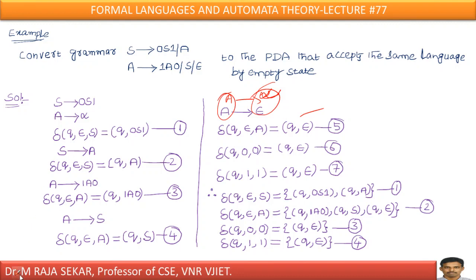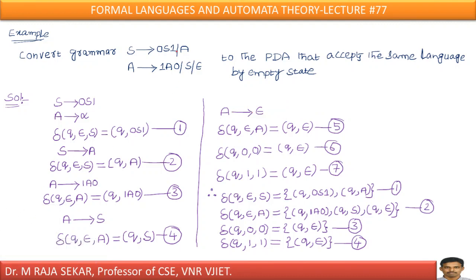Now, what are the terminal symbols in this grammar? 0 is a terminal symbol and 1 is also a terminal symbol. According to rule 2: delta of (Q, 0, 0) = (Q, epsilon), and delta of (Q, 1, 1) = (Q, epsilon).